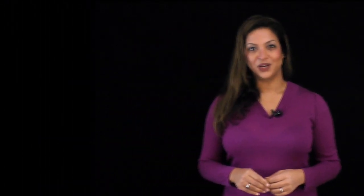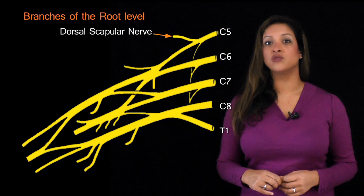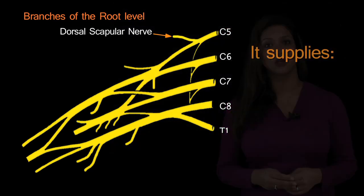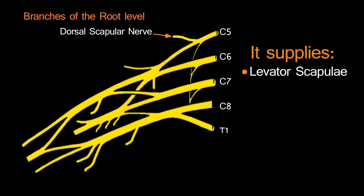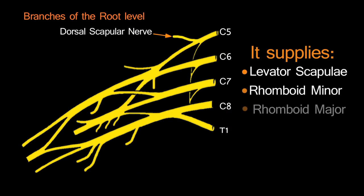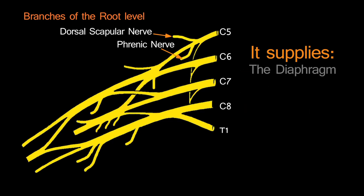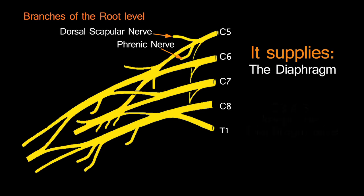The brachial plexus has a number of branches. There are 3 main branches given off at the root level. The first is the dorsal scapular nerve, derived from C5, which supplies 3 muscles: levator scapulae, rhomboid minor and rhomboid major. C5 also gives a contribution to the phrenic nerve, which supplies the diaphragm. The mnemonic is: C3, 4, 5 keeps the diaphragm alive.